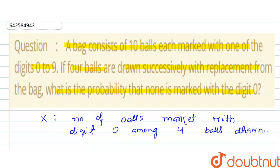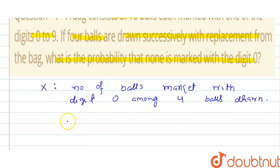Since the balls are drawn with replacement, the trials are binomial trials. So X follows binomial distribution with n equal to 4 and P equal to 1 by 10.